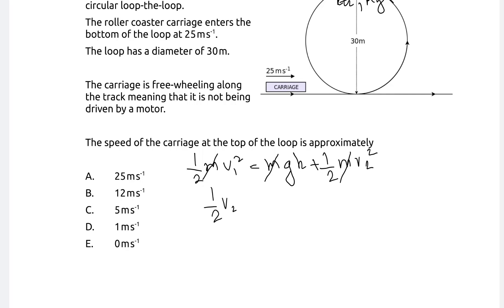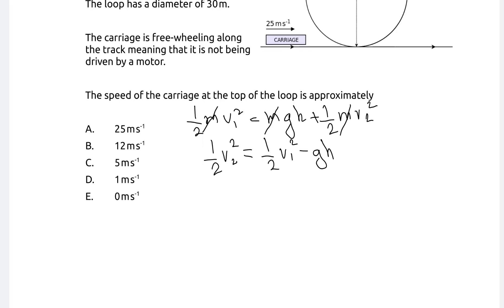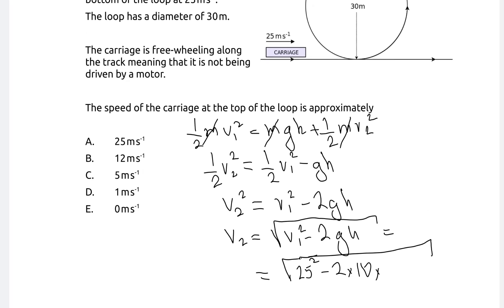We can directly substitute and find the final speed. We can say that a half V2 squared will be a half V1 squared take away GH. I'm going to multiply everything by 2, meaning that V2 squared will be given by V1 squared take away 2GH. Now I'm going to square root everything. So V2 will be the square root of V1 squared minus 2GH. This here is the square root of 25 squared, do not forget the square, take away 2. Let's take G to be 10 meters per second per second, multiply by the height, which was just 30. To put this into a calculator, we are going to get 5 meters per second. Correct answer is C.